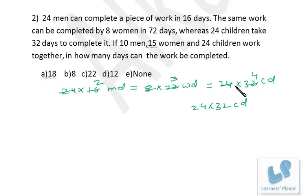15 women: 3 women are equal to 4 children. That means 3, 5... that means 4, 5. So 15 women are equal to 20 children, and these 24 children are there.